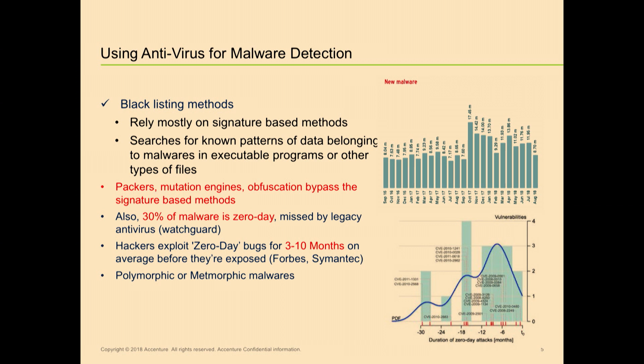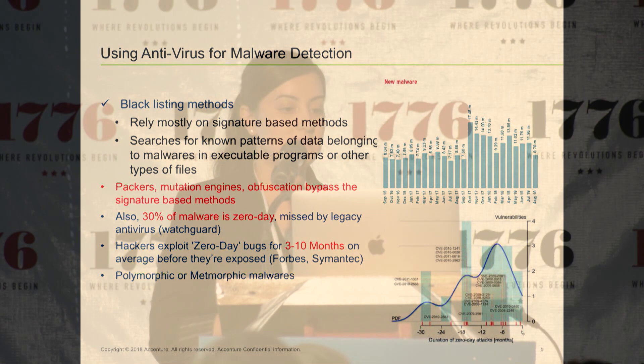Analyzing this amount of files is kind of impossible. Traditionally, the current platform within Accenture relies on static analysis and blacklisting methods — rule-based and signature-based methods. But the problem is, as you see again by this graph from AV Test, 30% of the malwares are zero-days and we can't do anything about those. It has been shown that if there is a zero-day malware, it might take three to ten months to find it and fix it.